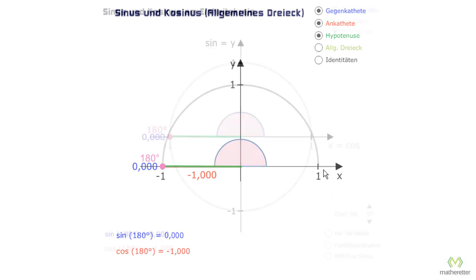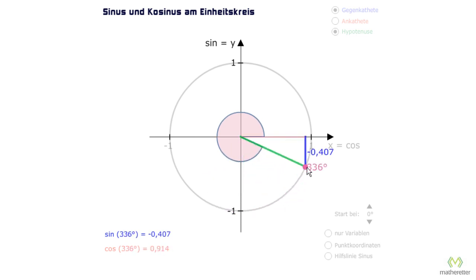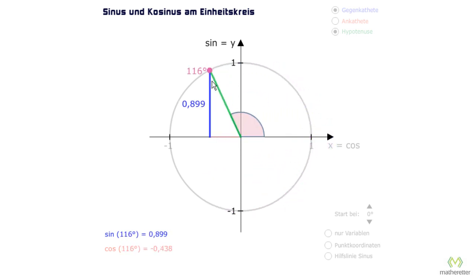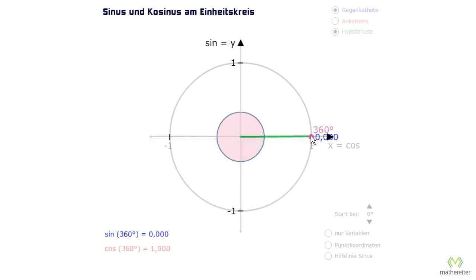It will look like that. And as we did in the lesson on circles, we can keep going past all possible angles in a circle. From 0 degrees, over 90 degrees, over 180 degrees, over 270 degrees to 360 degrees.